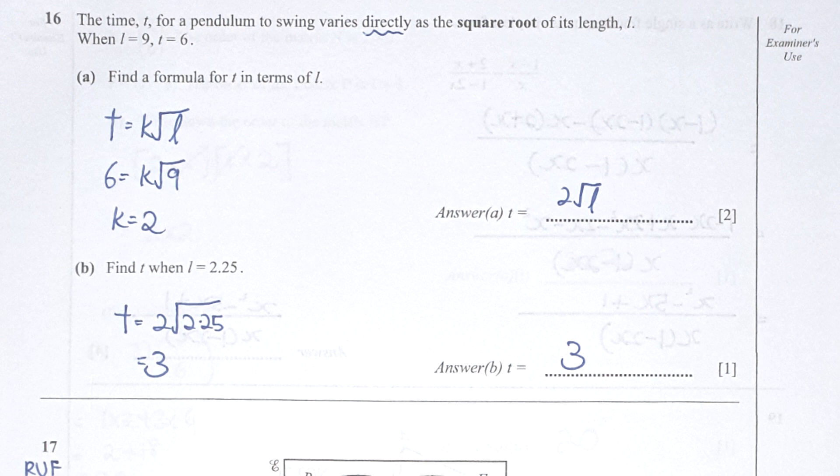For the next part, find t when l equals 2.25. Just compute t equals 2 times the square root of 2.25, giving the result as 3.